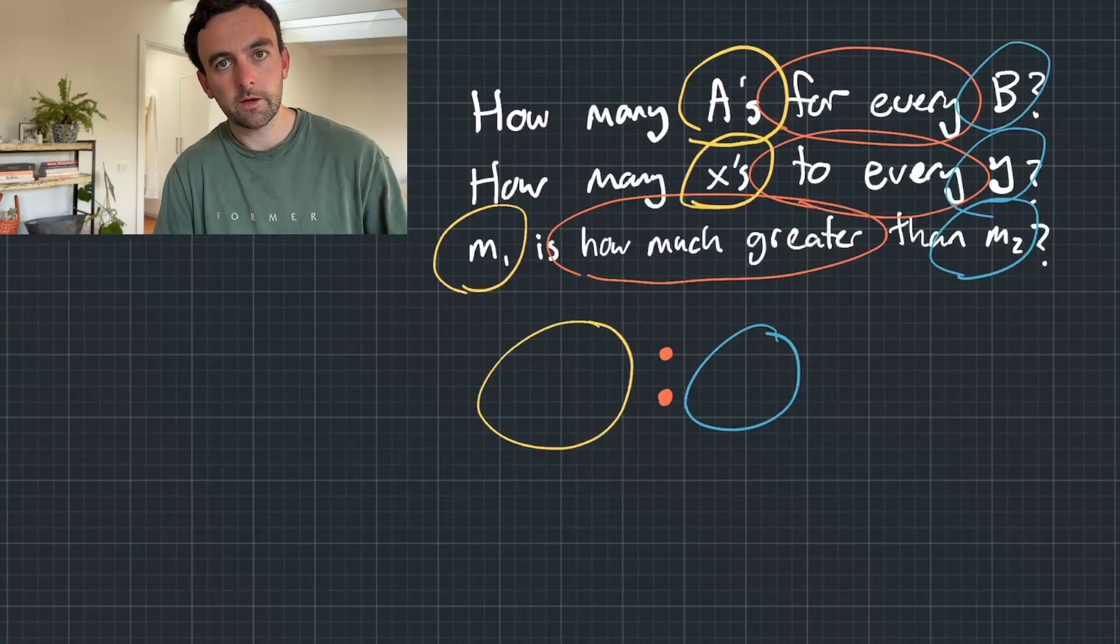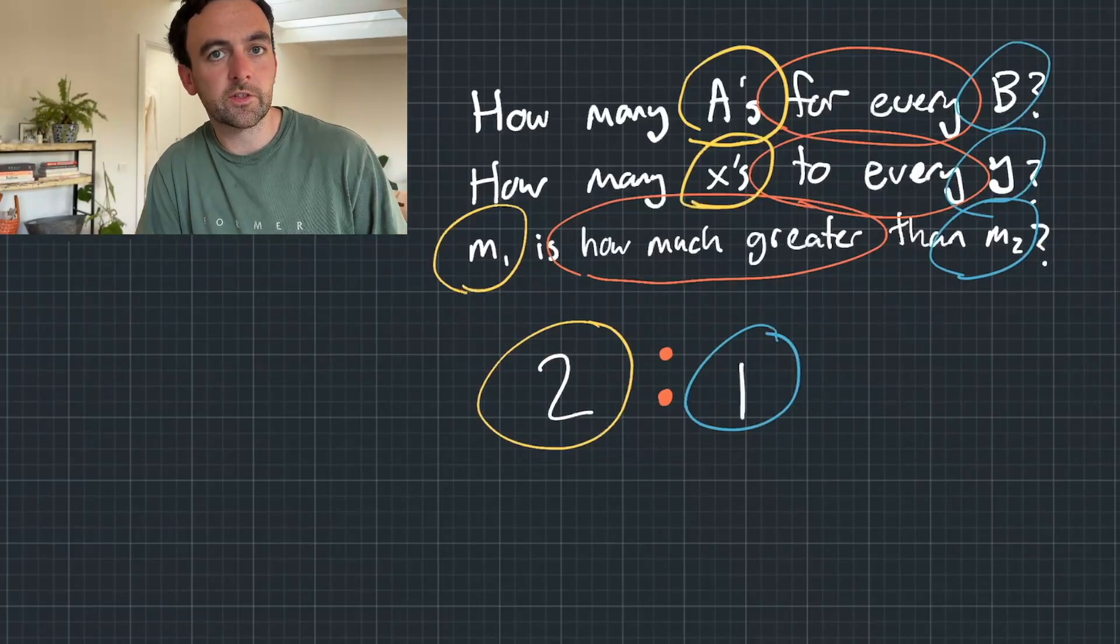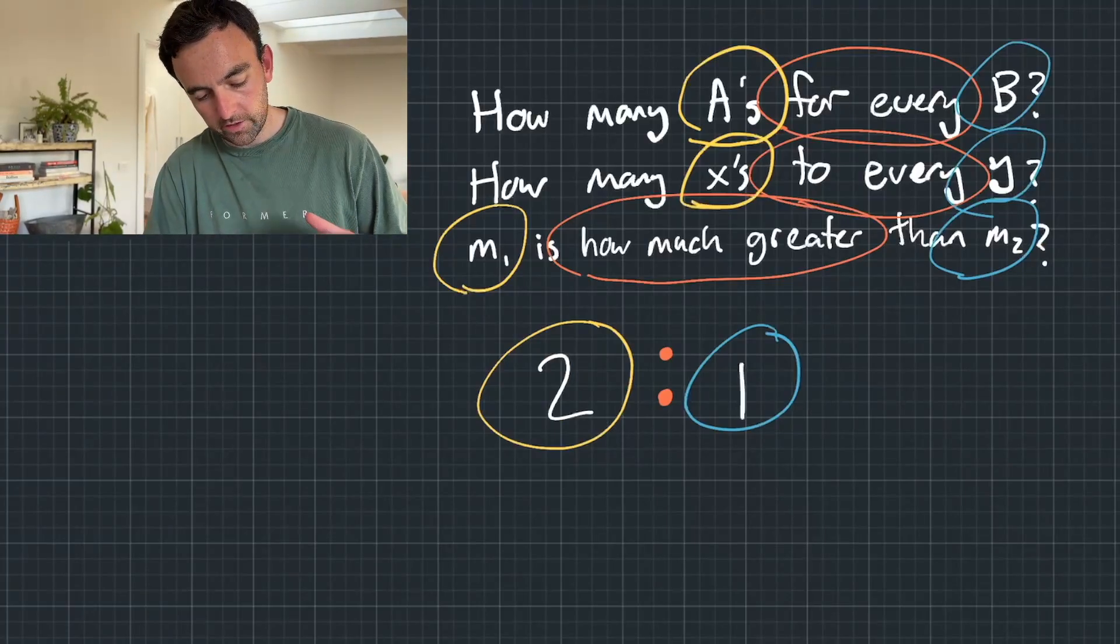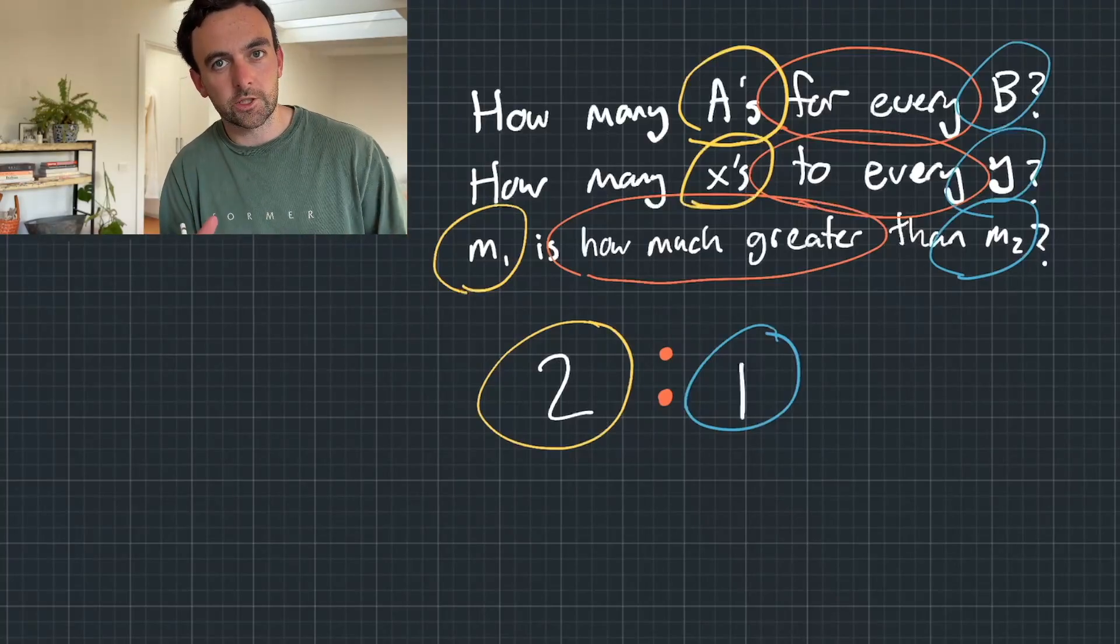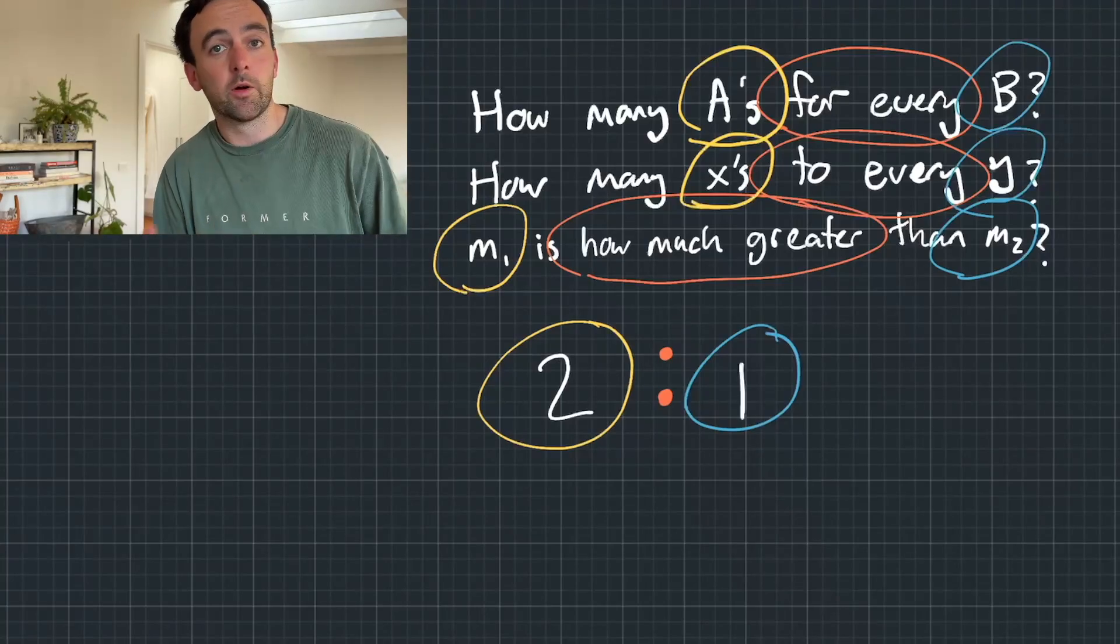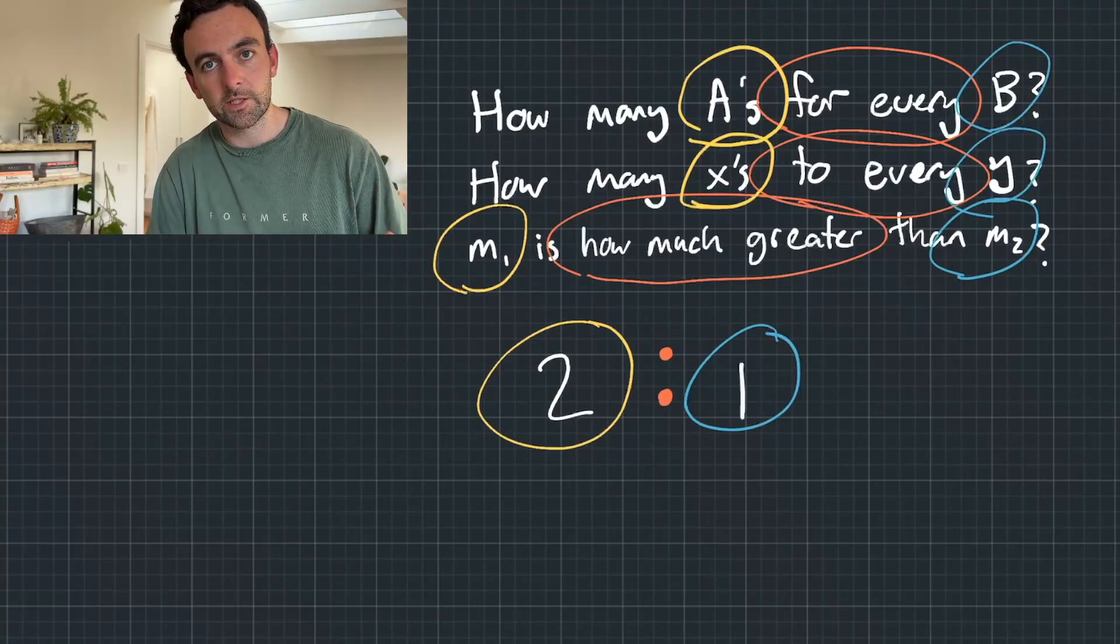Now, if we have nice, easy numbers like two to one in here, that's obviously quite easy. But in the GAMSAT, it's not usually like this. They're often using fractions or even both numbers being fractions. And the reason for that is it instantly becomes much, much harder.